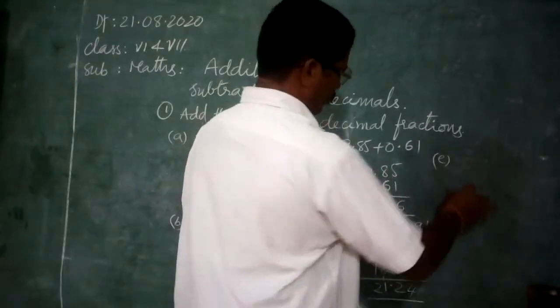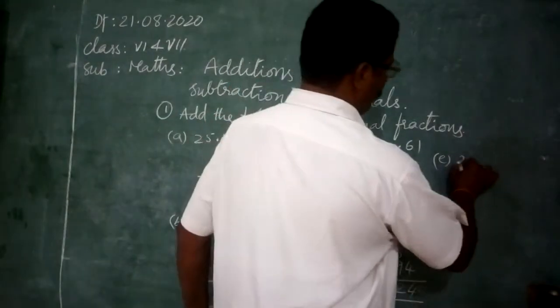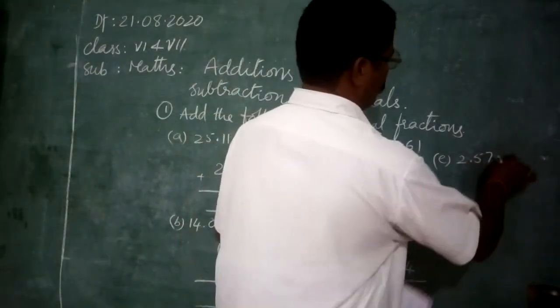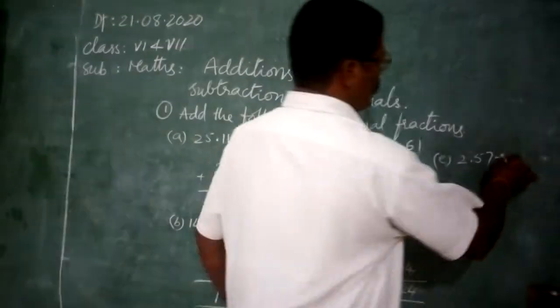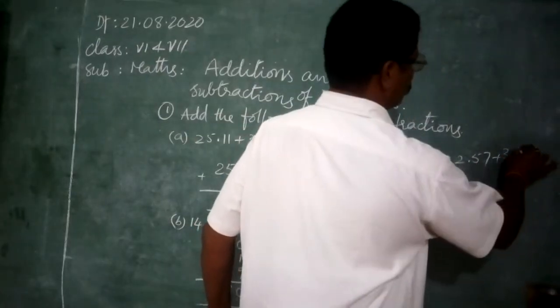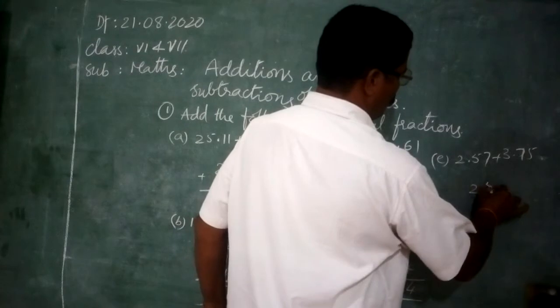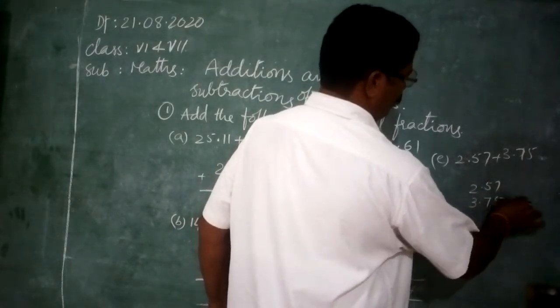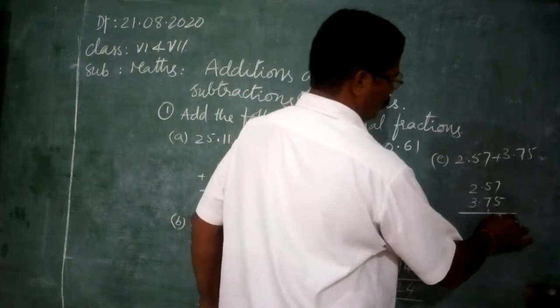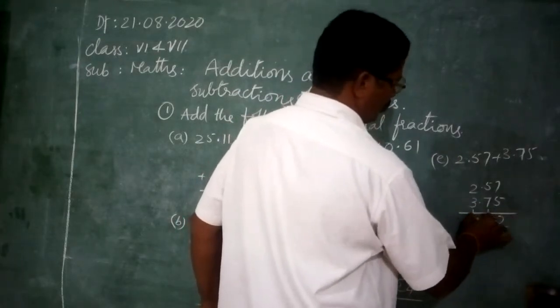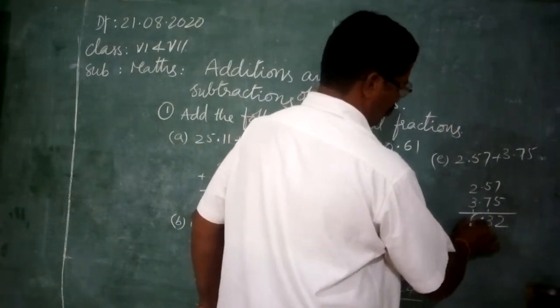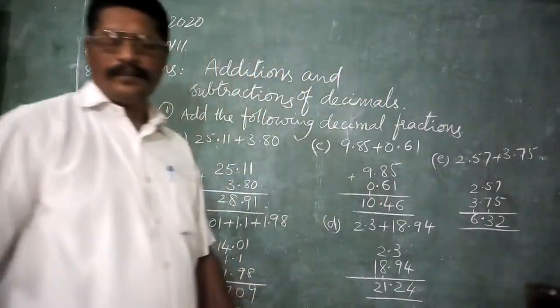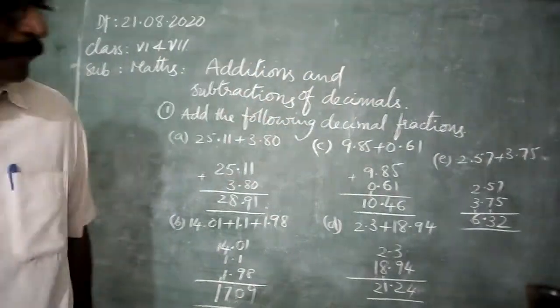One more question. 2.57 plus 3.75. 2.57, 3.75. 7 plus 5, 12. 8 plus 5, 13. 6. 6.32. Now, here.